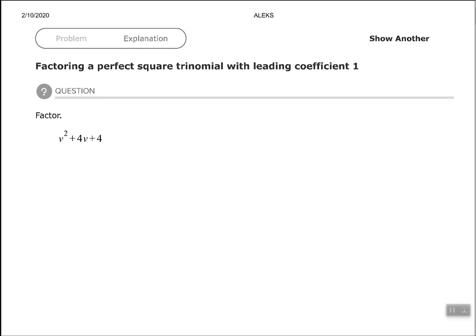Now the special trinomials, let's say we have a trinomial in the form of a squared plus 2ab plus b squared. We can factor that to be a plus b squared.